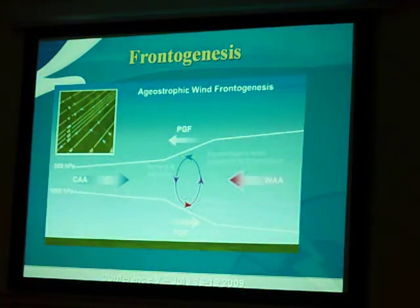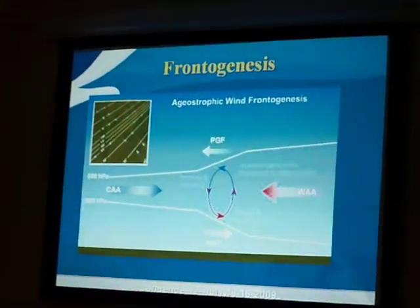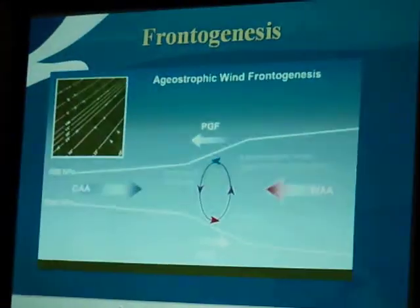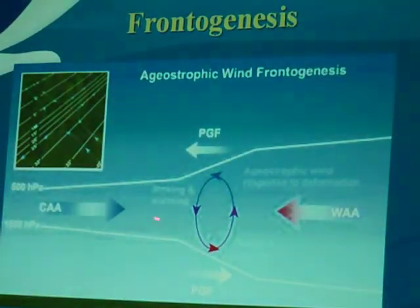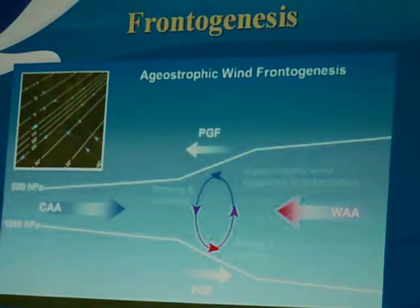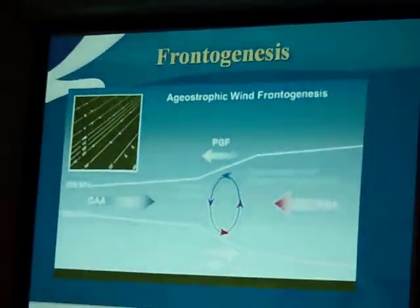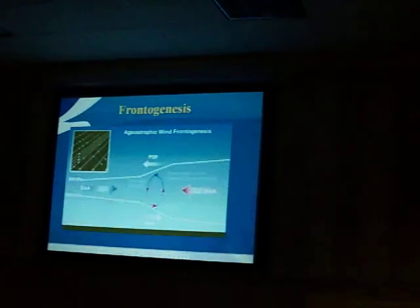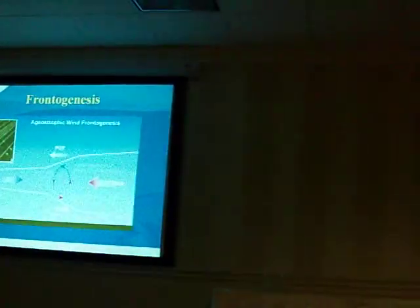Basically what happens in mesoscale frontogenesis: you have a cold air advection from the north and a warm air advection from the south. This kicks the thermal wind balance out of equilibrium. The atmosphere always wants to be in balance — geostrophic balance, thermal wind balance. The atmosphere doesn't like to be disrupted, but when frontogenesis occurs it knocks your thermal wind out of balance. It causes a circulation in the vertical, which enhances your upward vertical motion. And that's why frontogenesis is so important — we'll show some examples coming up.